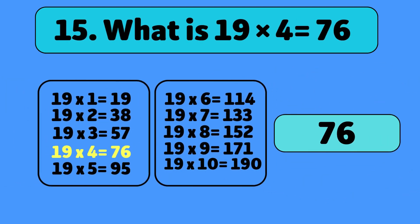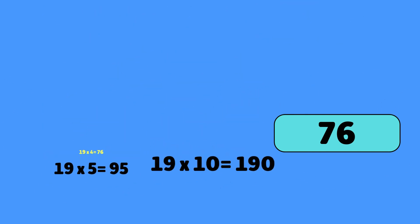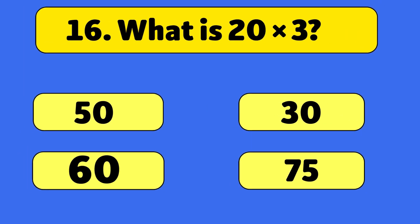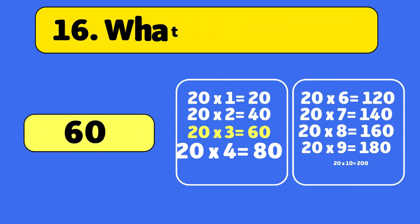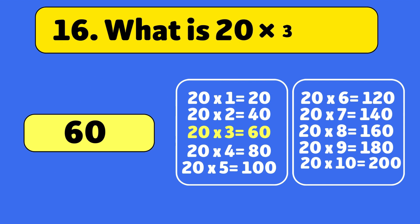19 times 4 is equal to 76. 20 times 3 is equal to... 60. 20 times 3 is equal to 60.